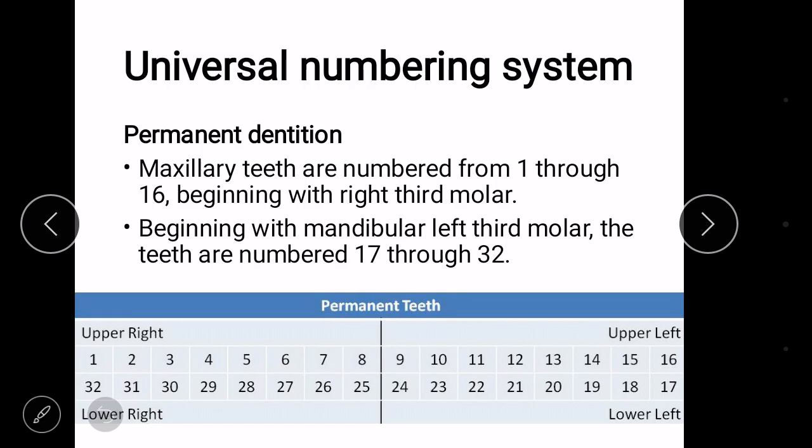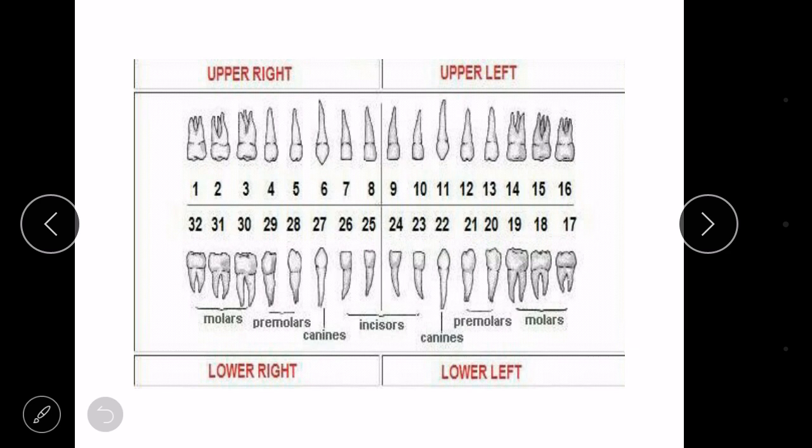Coming to the permanent dentition, here we use numbers with the same way where it moves in a clockwise direction, starting from 1, which denotes maxillary right third molar, 16 that denotes maxillary left third molar, mandibular left third molar that is by 17, and 32 for mandibular right third molar.